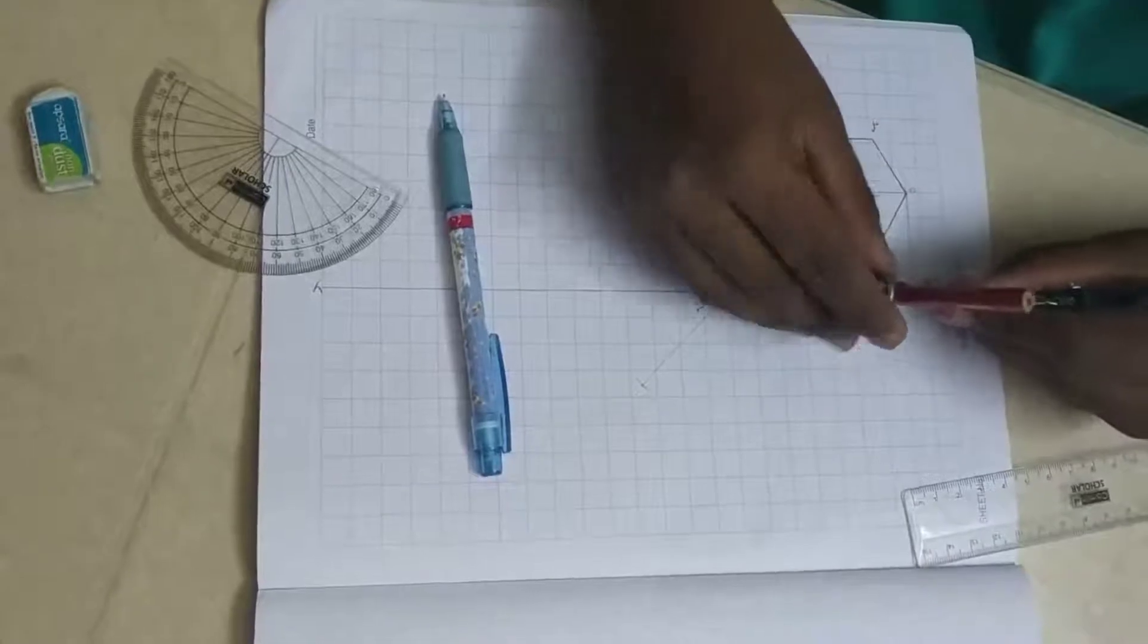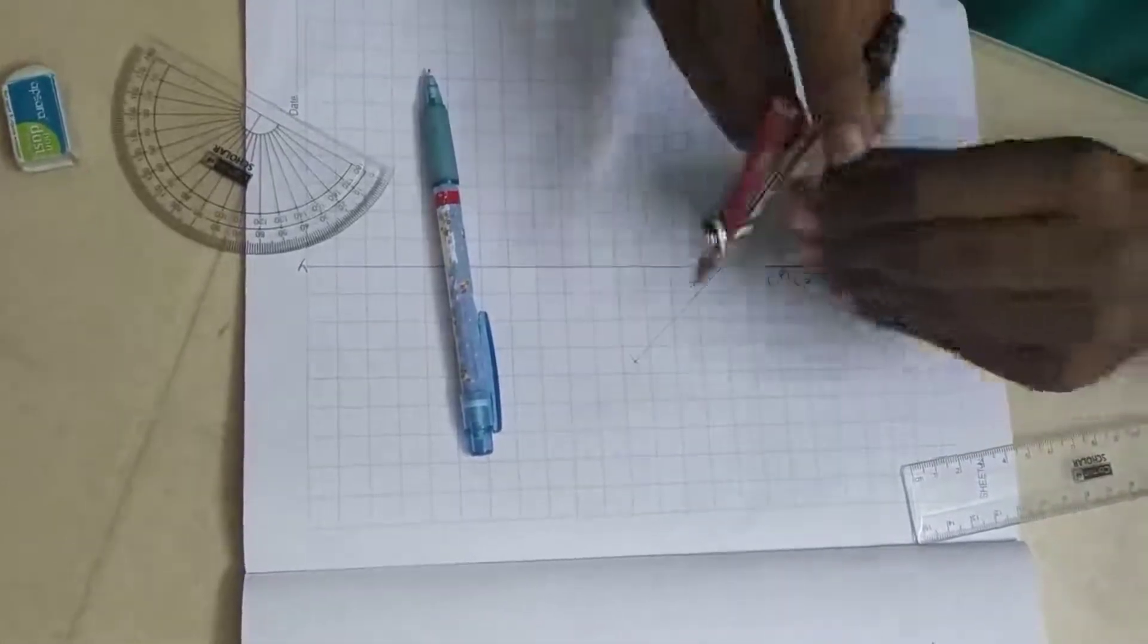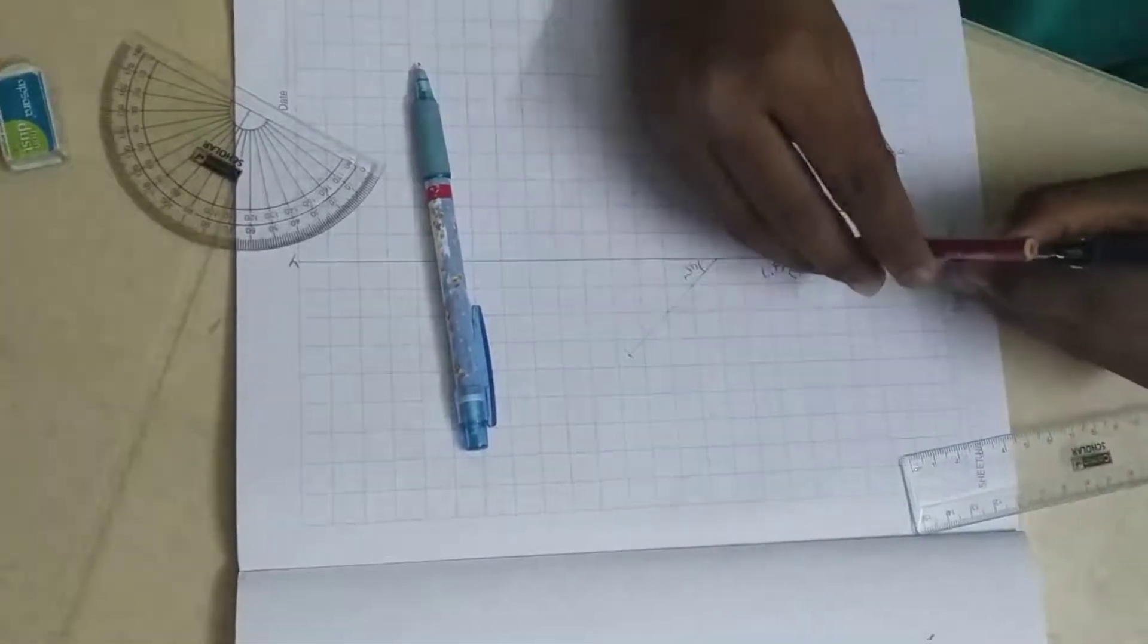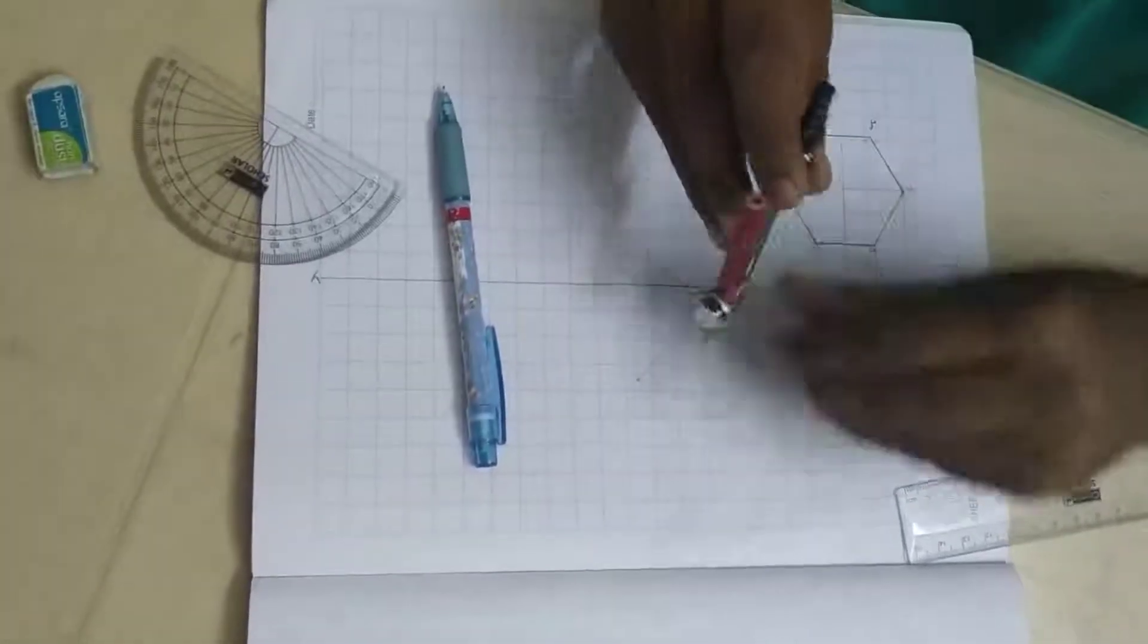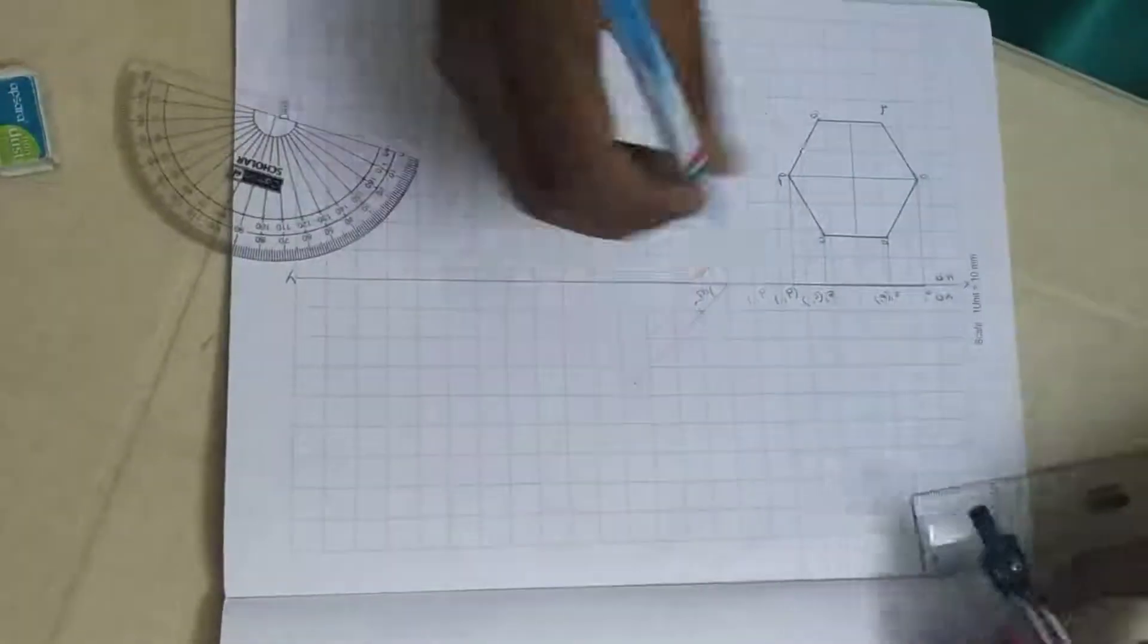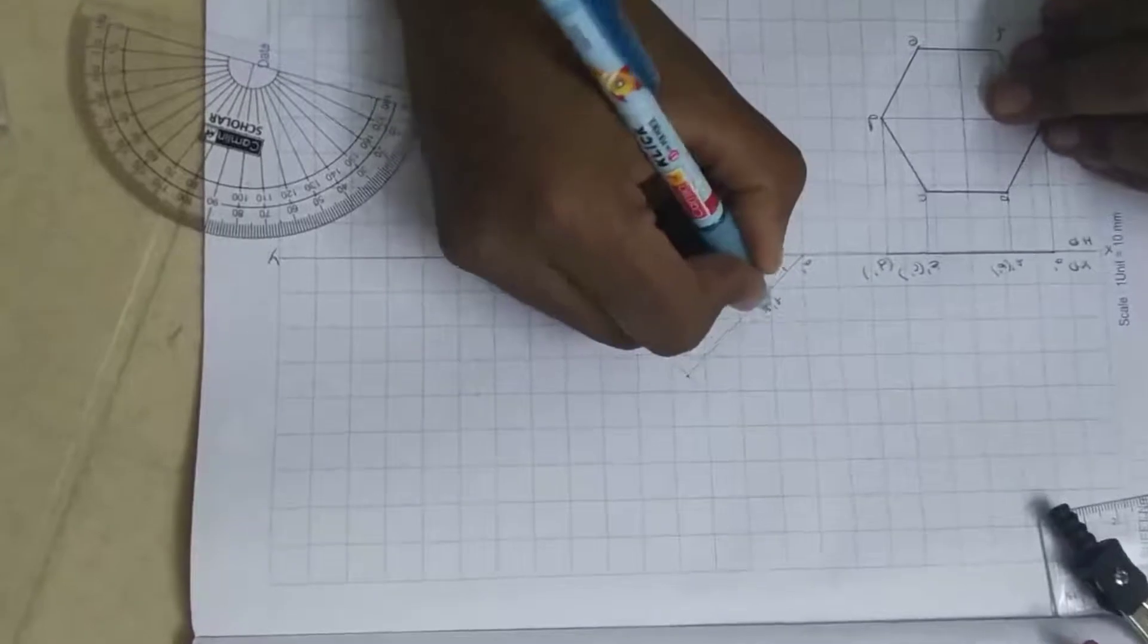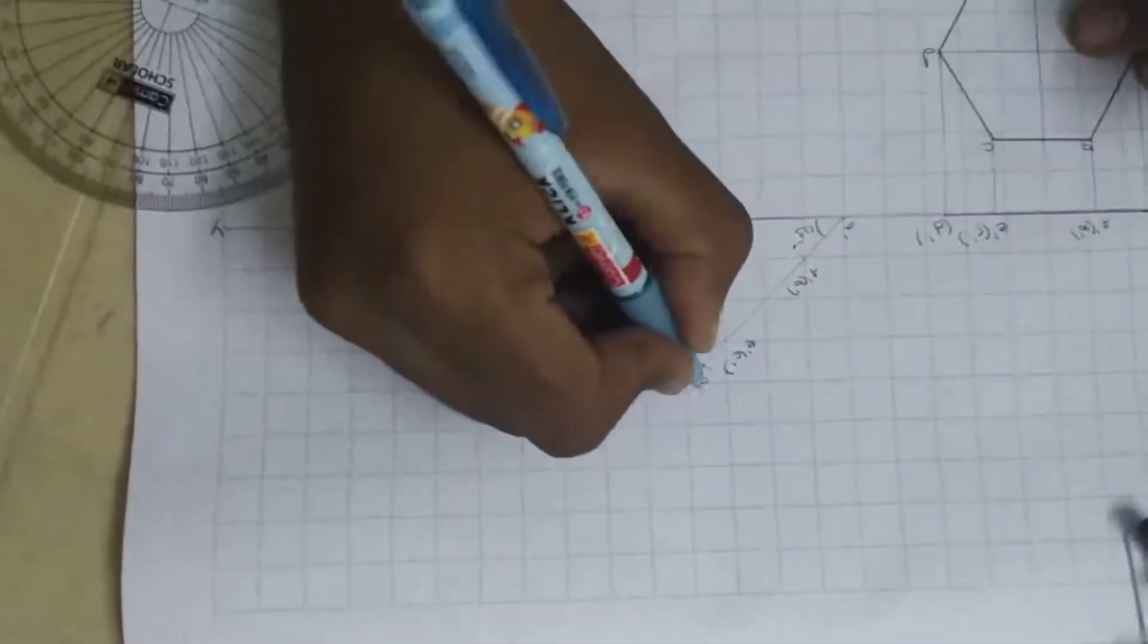And measure from A dash to D dash C dash. Cut it. And measure from A dash to F dash B dash. And cut an arc. And this is A dash and this is F dash, B dash, E dash, C dash and this is D dash.